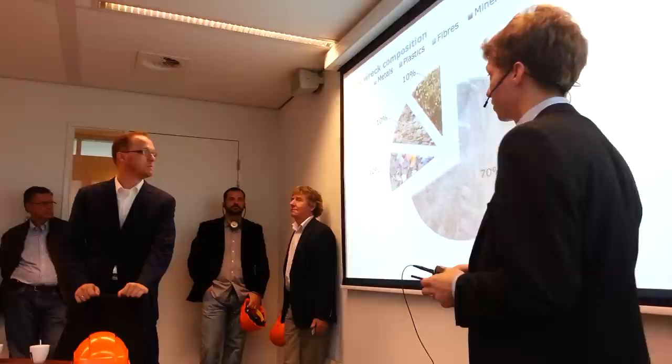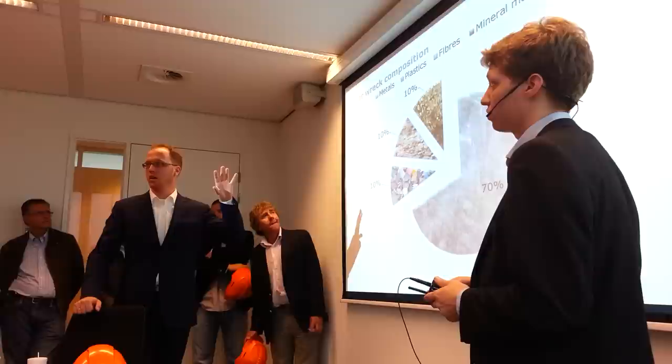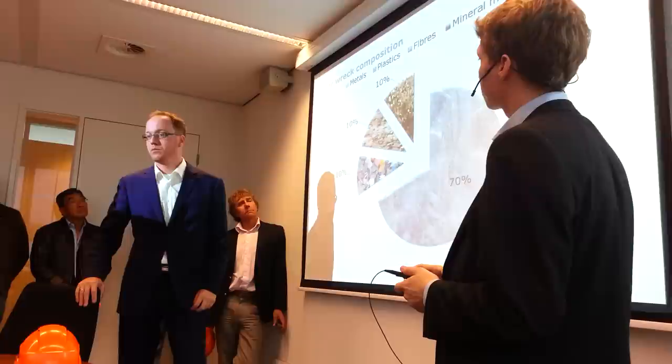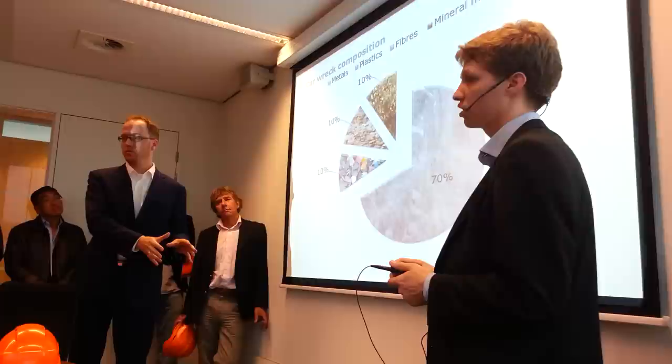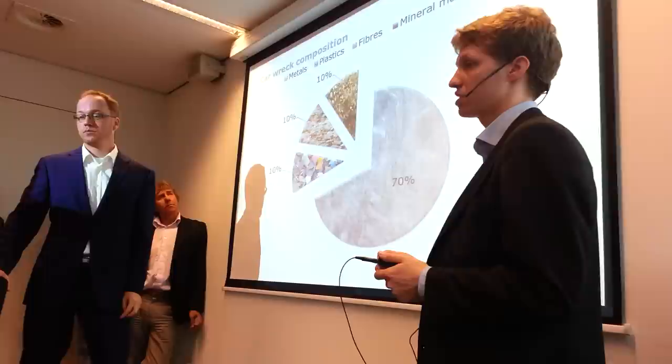This is basically a very crude composition of a vehicle. 70% is metal — we never see that here. The 70% is taken out at the shredder before it comes here. So we mainly see plastics, minerals, and fibers. And this is what we separate in this plant.